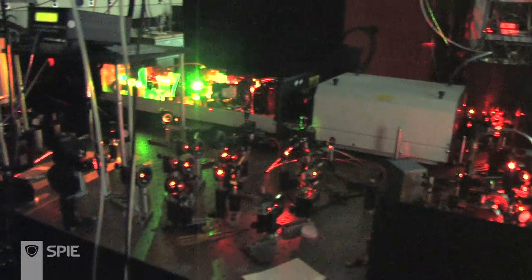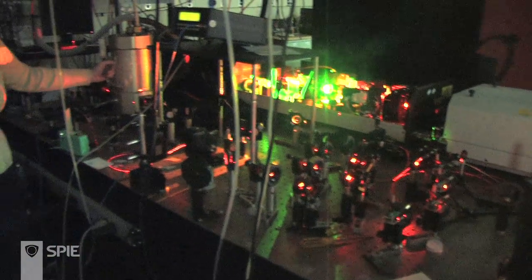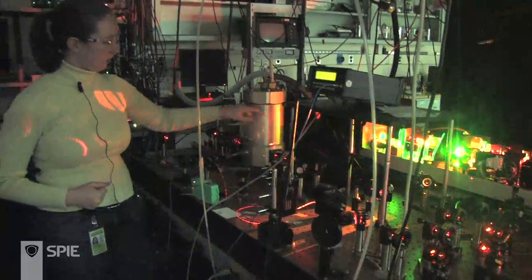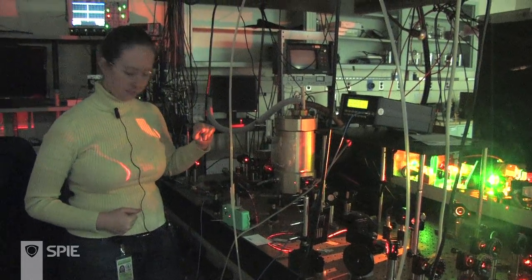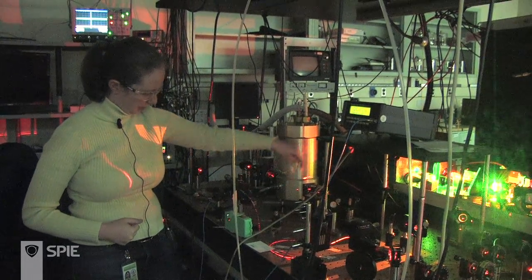So here is the cryostat that we use to keep our sample, our rare earth ion-doped crystal, at 4 Kelvin. It's got an optical axis down here where the crystal is.